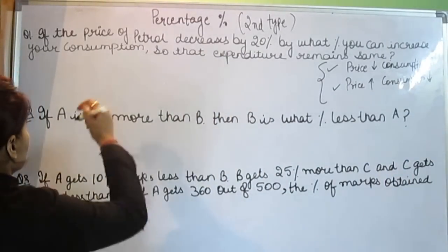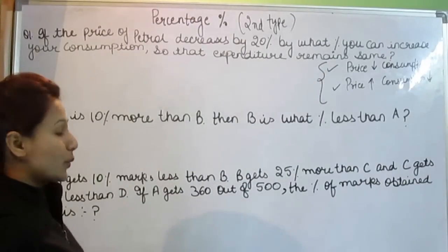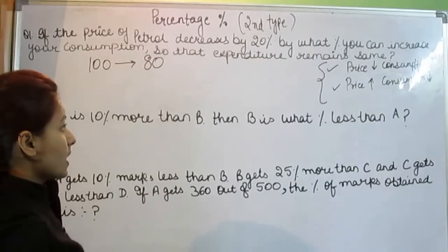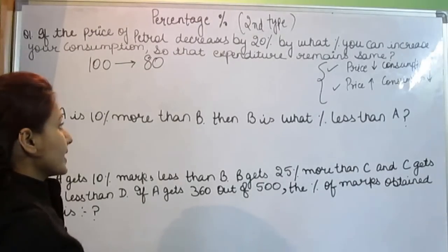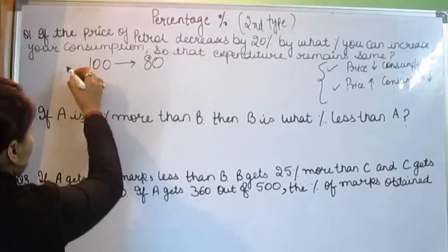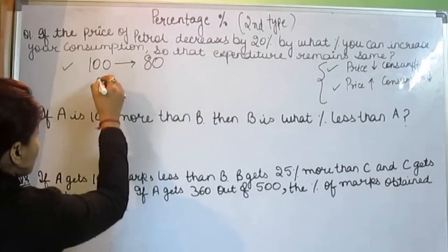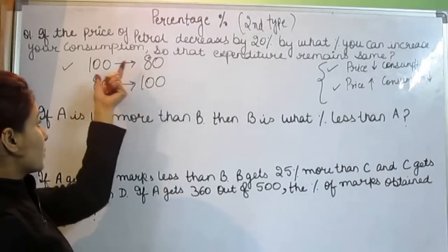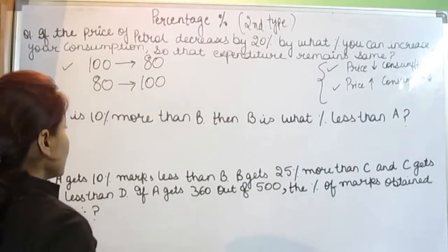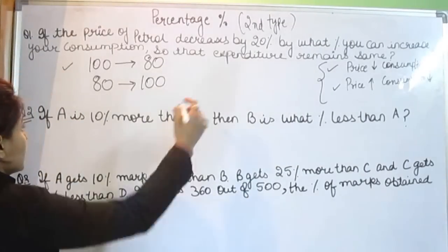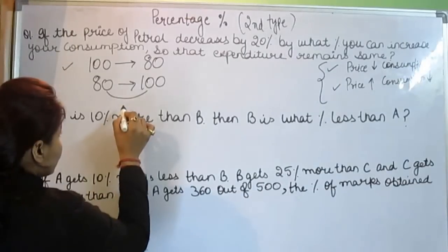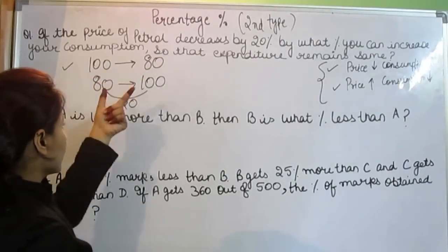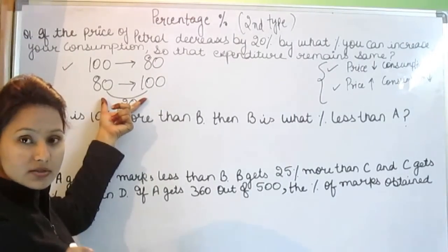Let's start. The question is: if the price of petrol decreases by 20 percent — it means the price was 100 and now it is decreased by 20 percent, so it becomes 80. By what percent can you increase your consumption so that expenditure remains the same? If price is decreased, consumption will increase. This is inverse proportion. The price is decreased by 20 percent, but consumption is not increased by 20 percent.